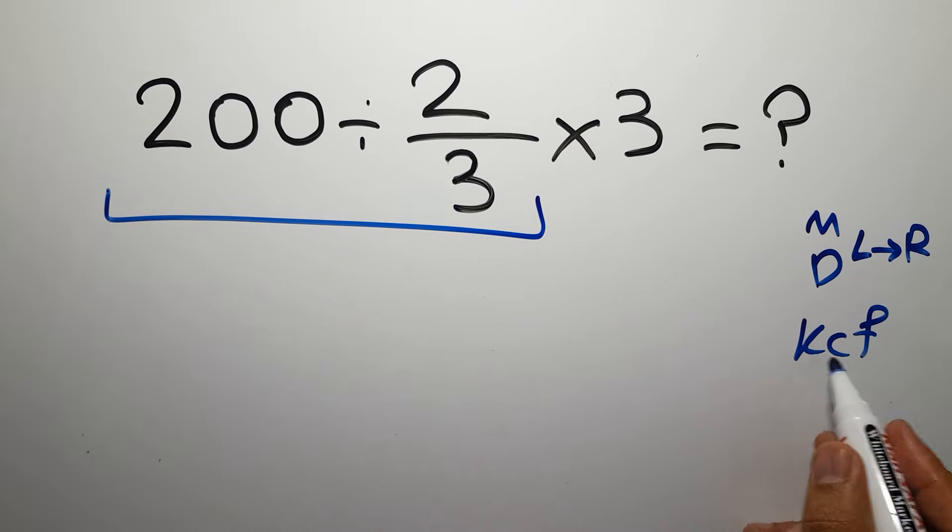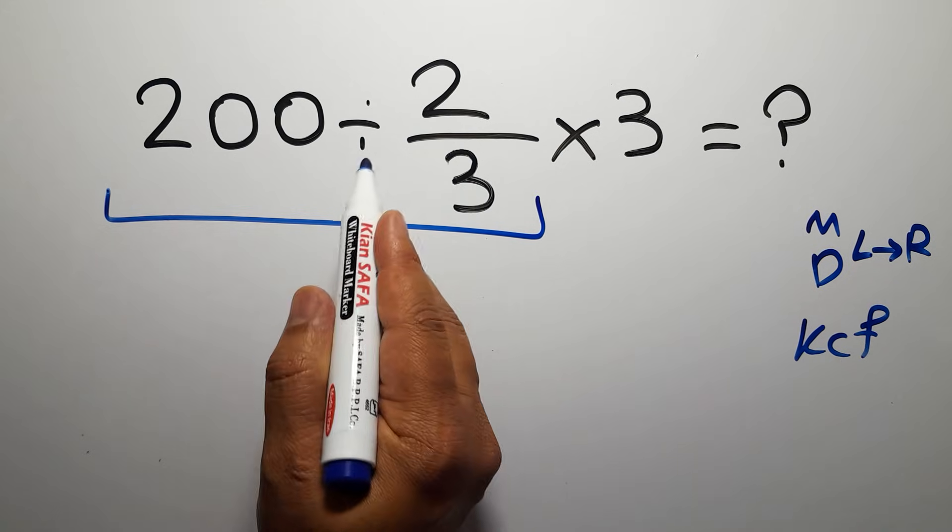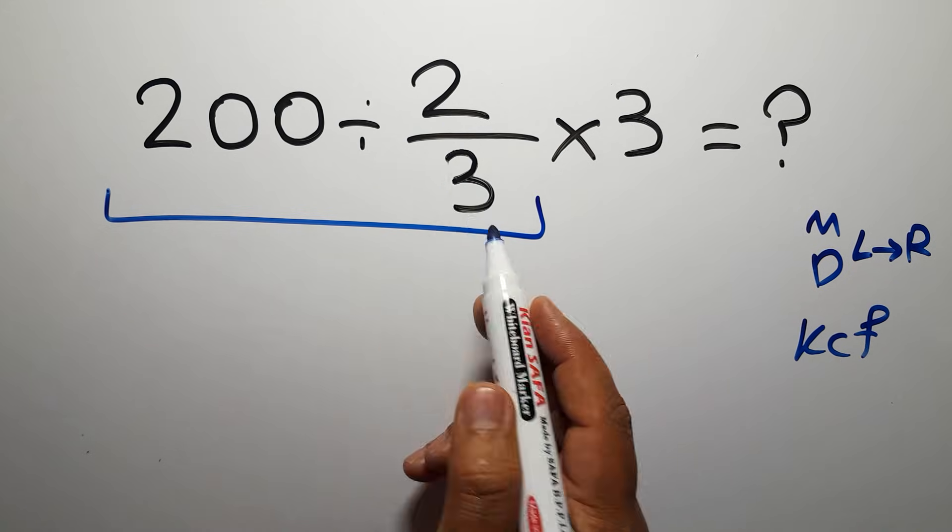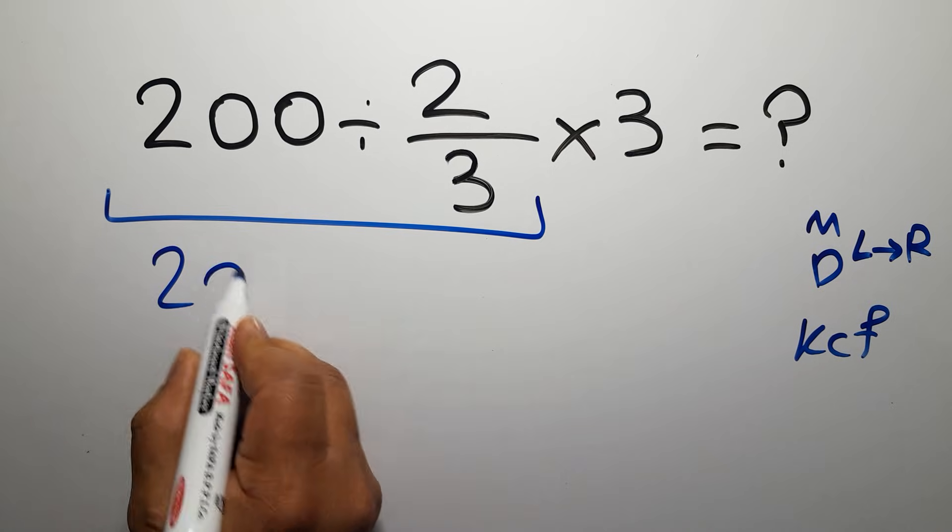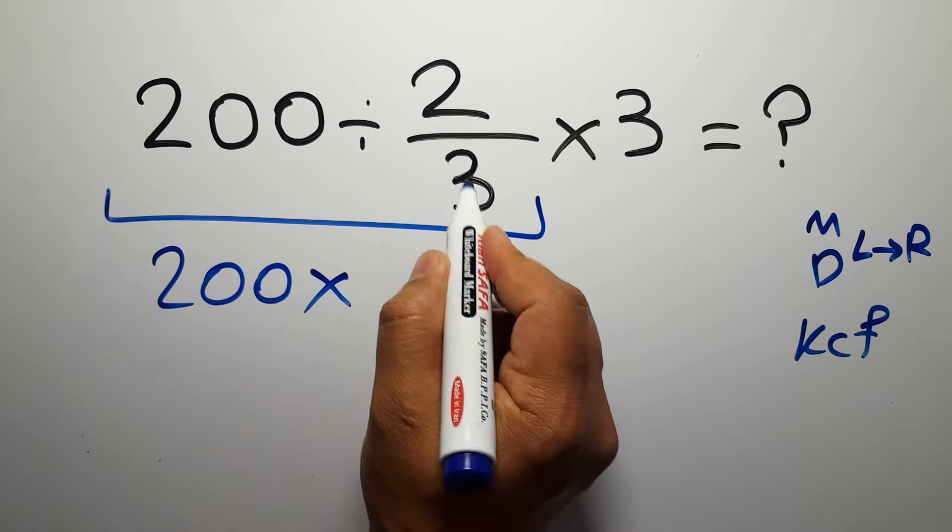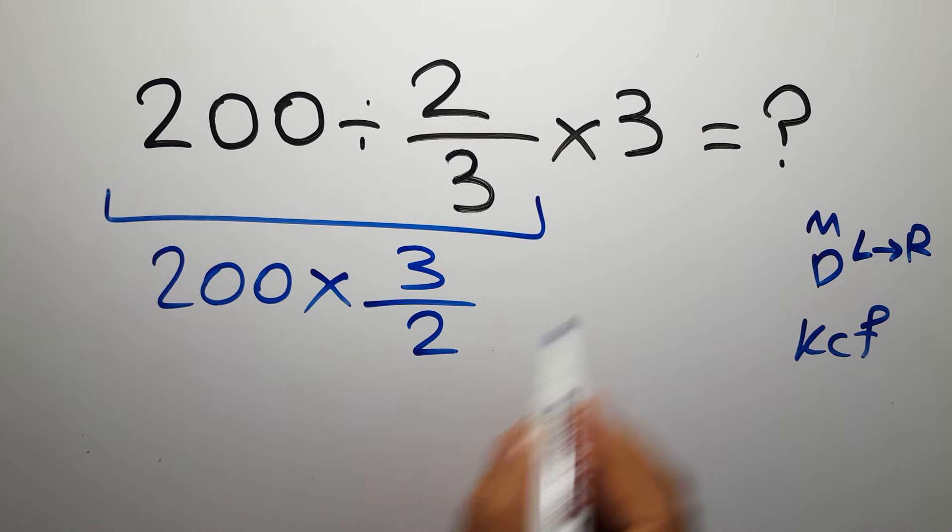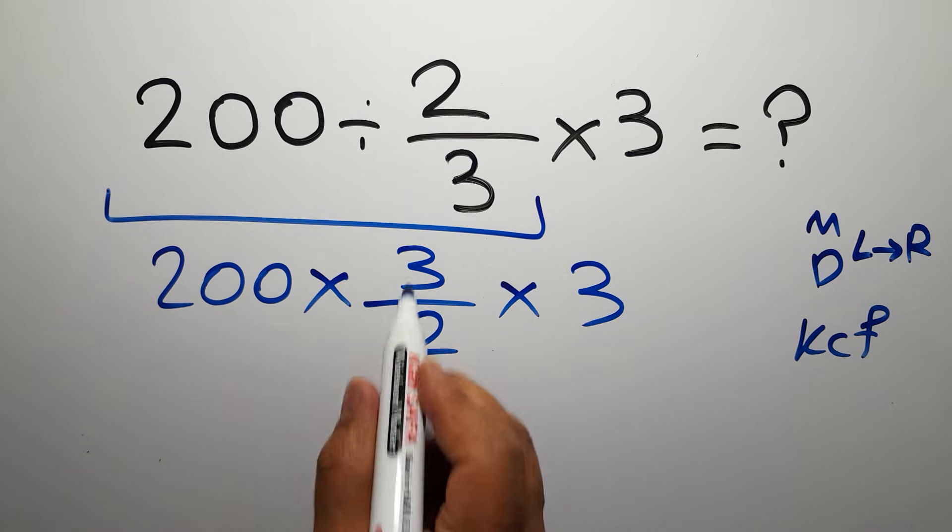K stands for keep, C stands for change, and F stands for flip. Keep the first fraction, change division to multiplication, and flip the second fraction. We can write 200 times 3 over 2, then times 3.